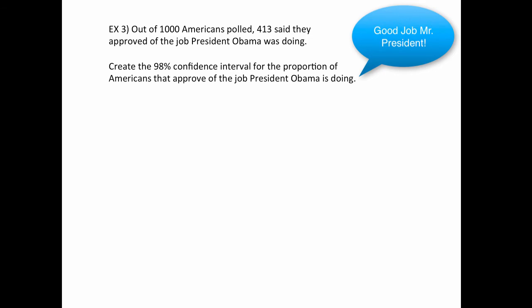Now for a full example, top to bottom, here's everything. So 413 people out of 1,000 said they approved of the job the president was doing. Now make a 98% confidence interval. So first of all, I would write down the data. n is 1,000, x is 413. You divide them. That's where the p-hat comes from, the sample percentage, 41.3%, although we usually use a decimal form.